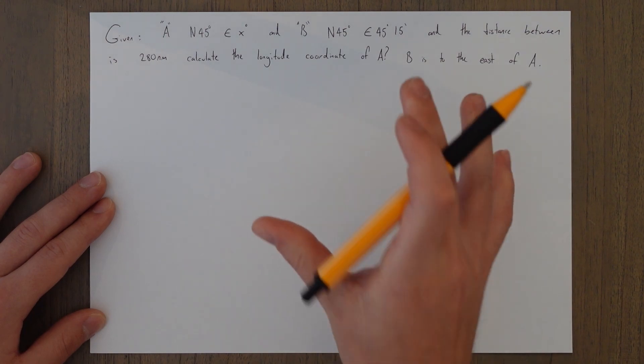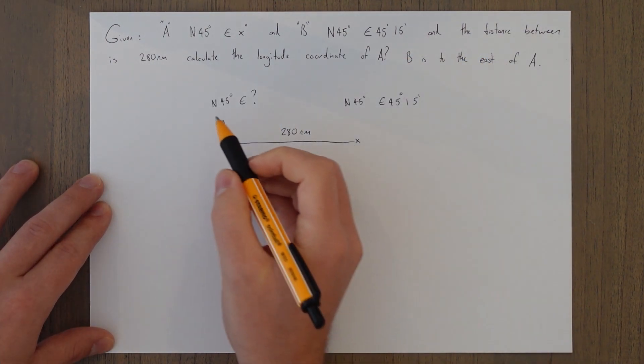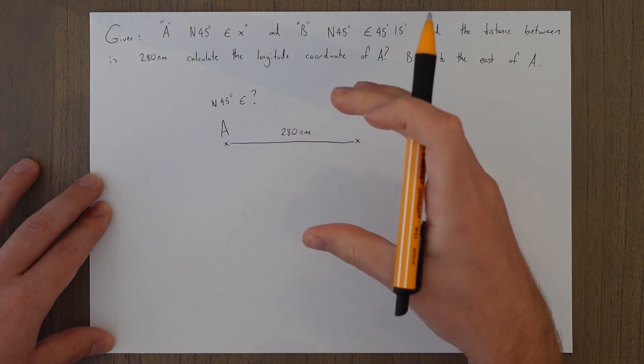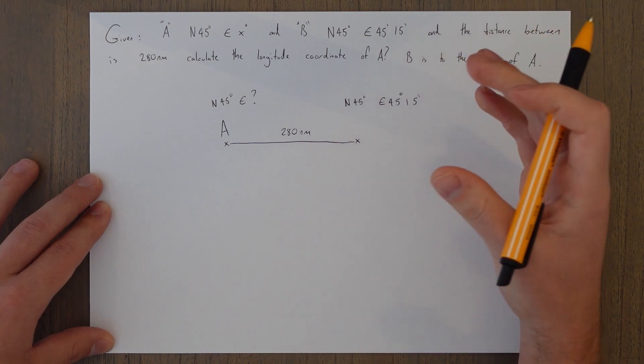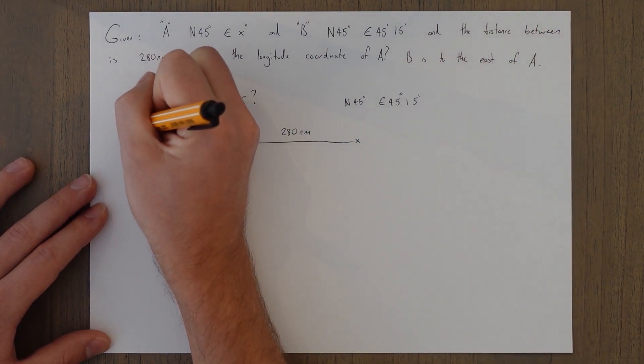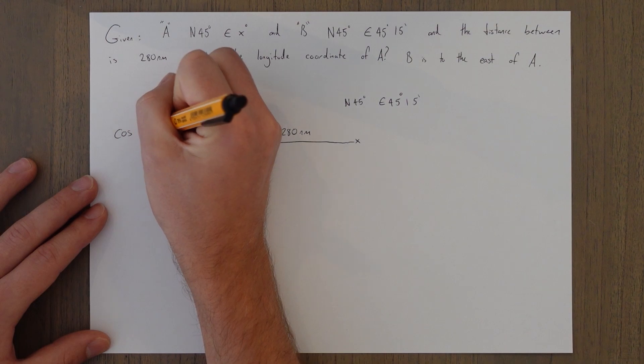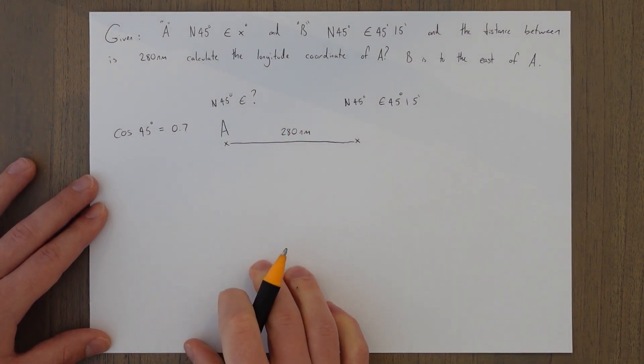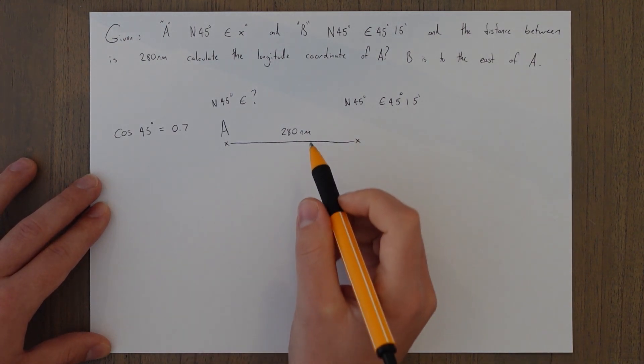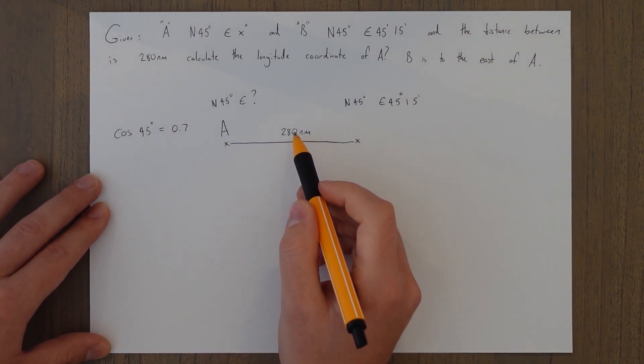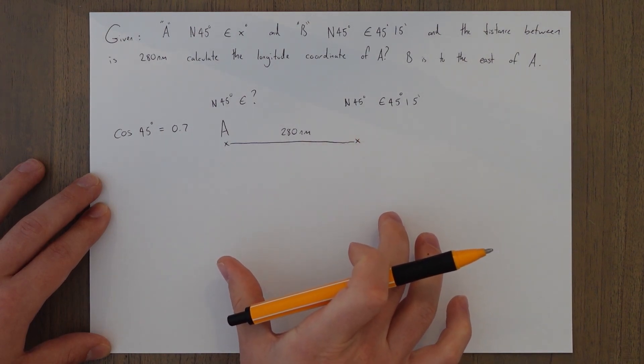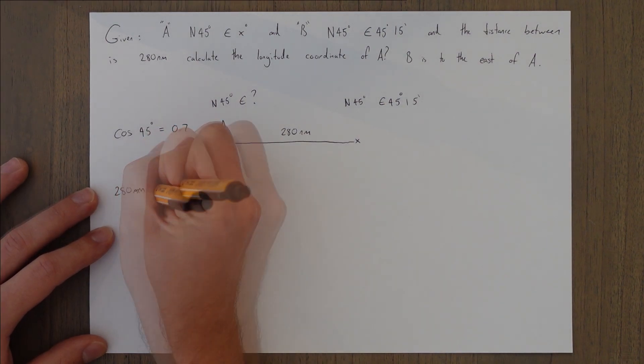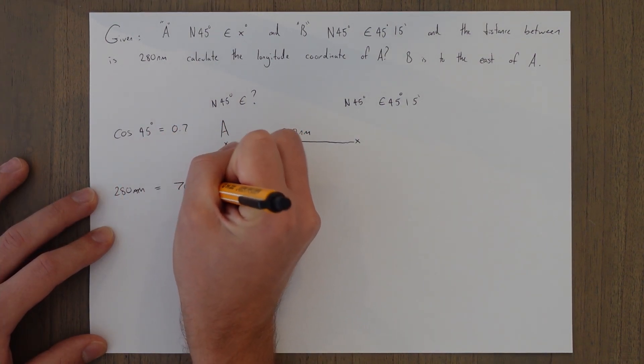So first things first, we draw the effing picture. Because we're at north 45, we know that we're going to have to use the proportional change, and we've just done this one in the previous example. Cosine 45 equals 0.7, close enough. And that means that this is only 70% of the distance that we would be covering when we are at the equator. So 280 nautical miles is equal to 70% of the distance.